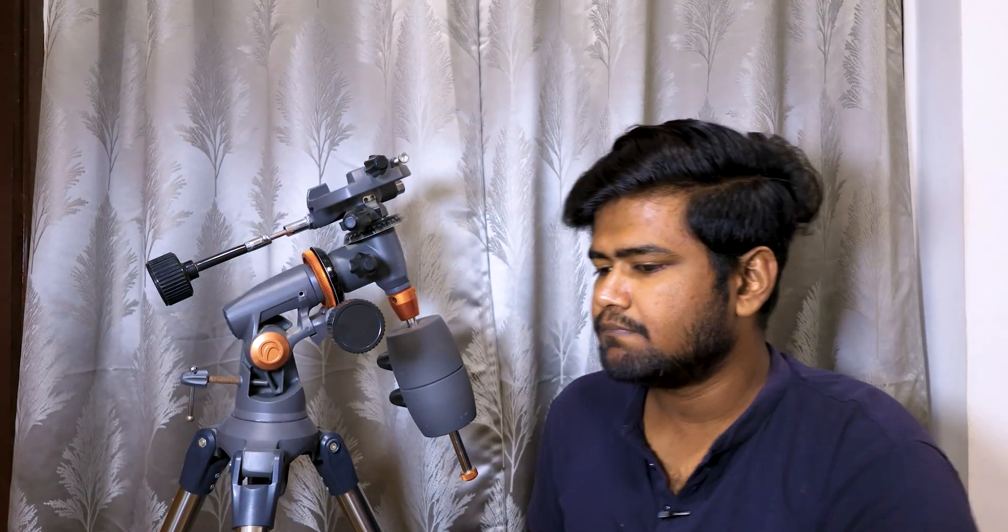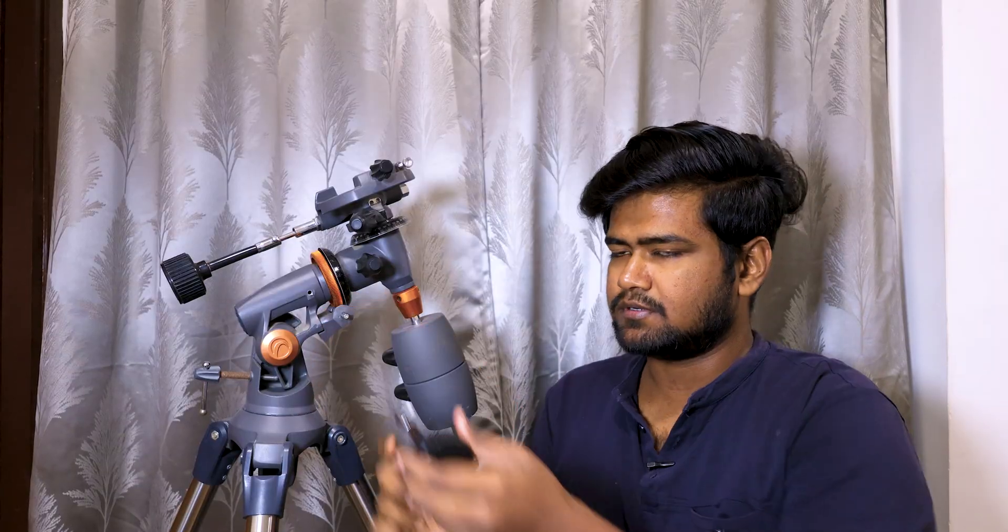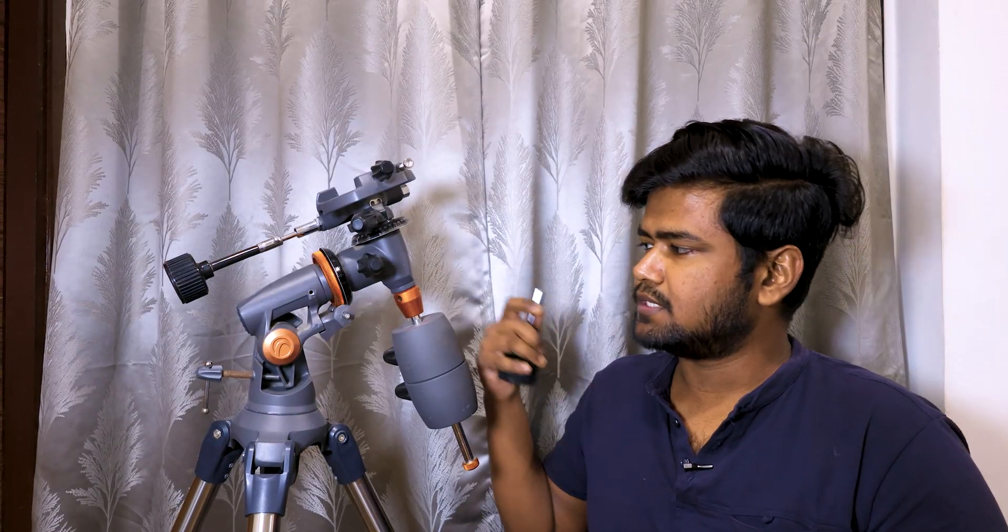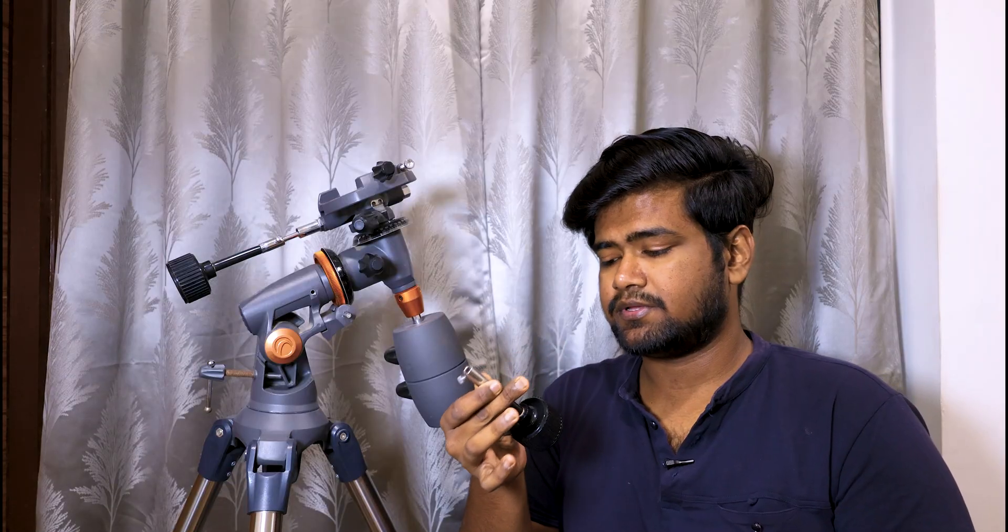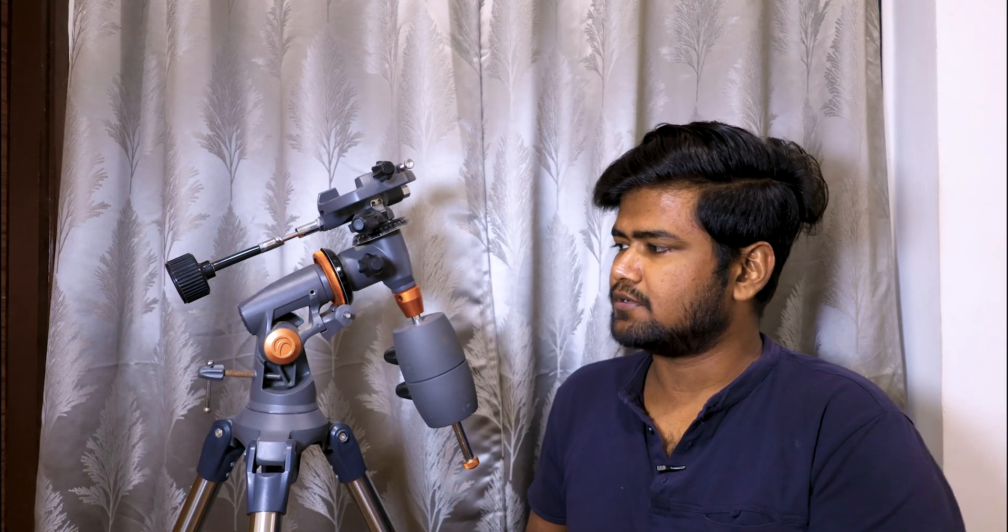And we will use an Allen key to tighten that screw. Before that, we need to take out this knob because this knob is not gonna be useful if you are using the motor drive. There is another side as well we can attach it, but we cannot access this particular knob because the motor drive is gonna lock this axis and you cannot move it at all. So let's keep this on the side and let's begin with our motor drive.